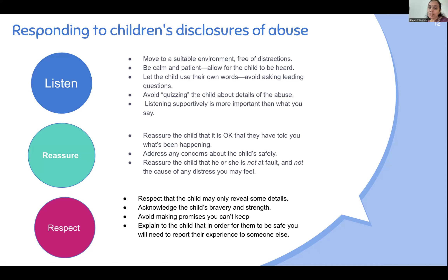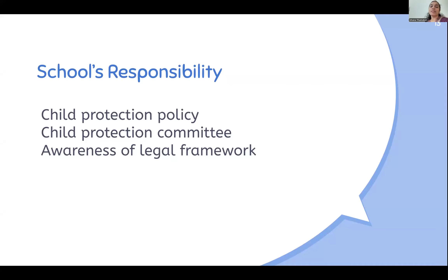When a child approaches you, there are three things to do: listen, reassure, and respect. Take them to a safe place and listen to what they have to tell you. Avoid quizzing — asking too many questions can confuse the child and risk fabrication. Actively listen, then assure them: 'It's okay, and I appreciate you for coming and reporting to me — you're a brave girl or boy.' Respect means don't expect the child to explain more than they want to — listen to what they have to tell you.